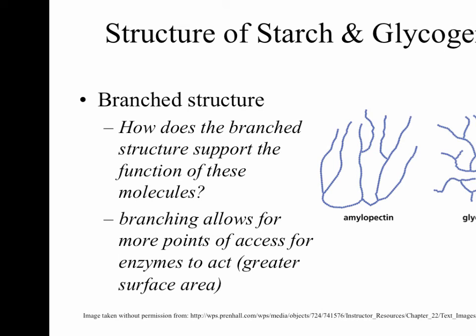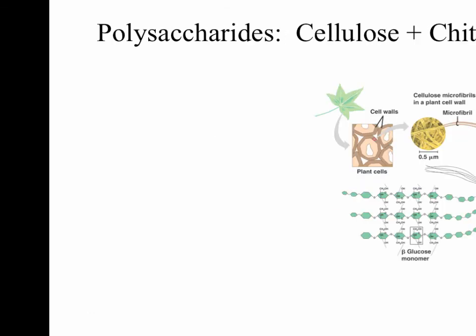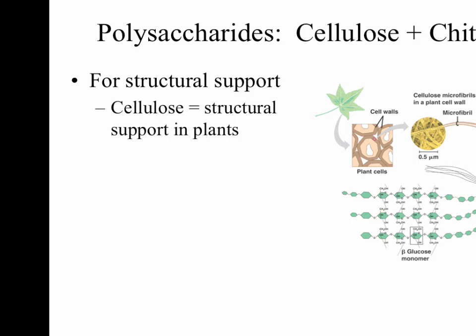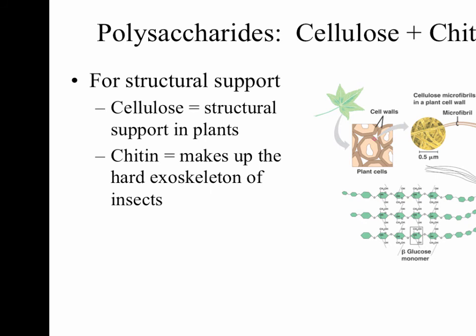The other type of polysaccharide to know about is a little different: cellulose and chitin — it is pronounced chitin, not chitin. These are polysaccharides that are for structural support, not for energy. Cellulose is found in the cell walls of all plants and literally helps them have their physical structure and stand up. Chitin is the polysaccharide that makes up the hard exoskeleton of insects — insects have an exoskeleton whereas we have an endoskeleton, and that hard outer shell is made of chitin.